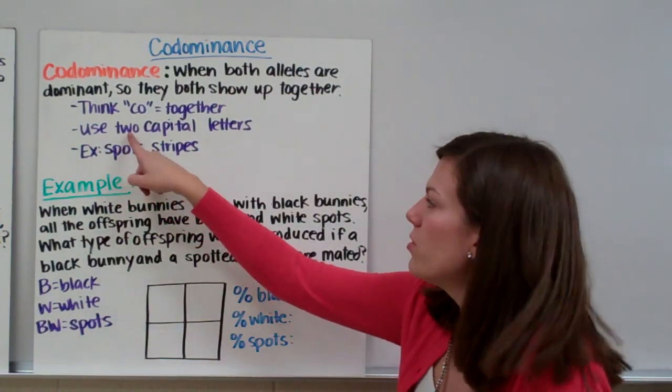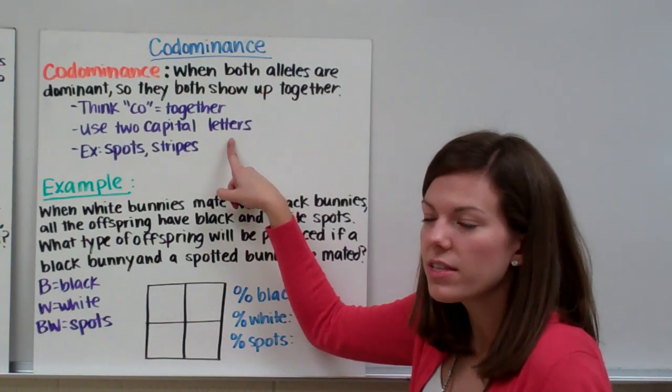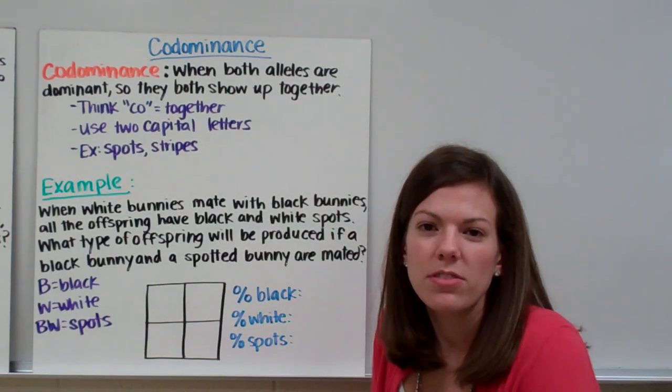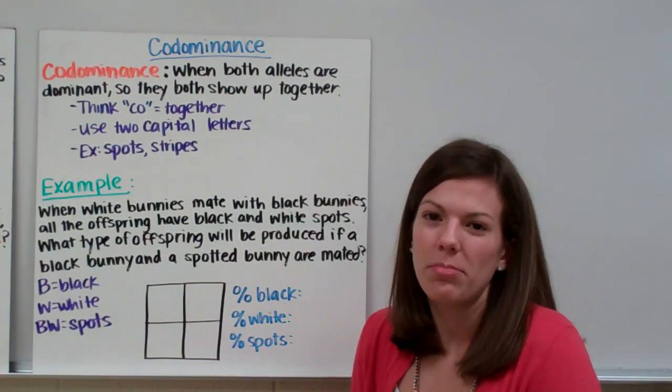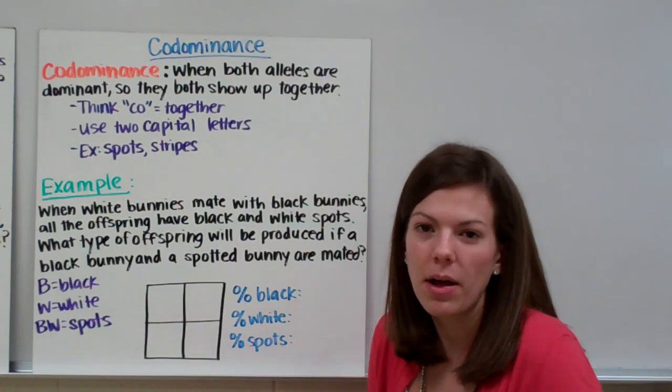Also with codominance, we use two capital letters. We have no recessive letters because neither allele is recessive. Some examples of phenotypes caused by codominance are spots and stripes, like a dalmatian or a striped tiger. Whenever you see spots and stripes, that's a sign that we're talking about codominance.